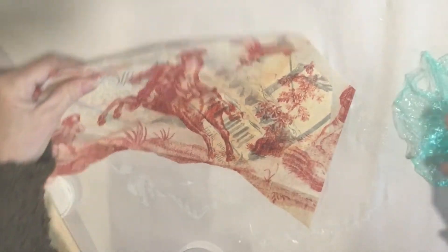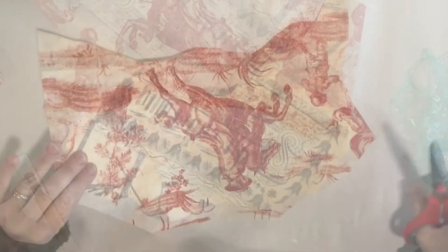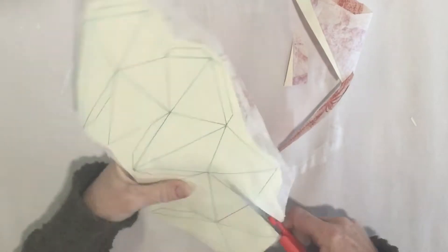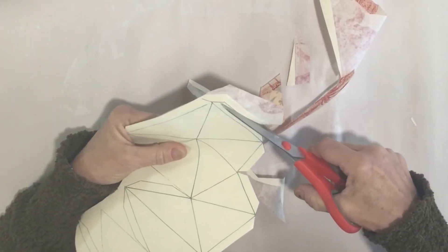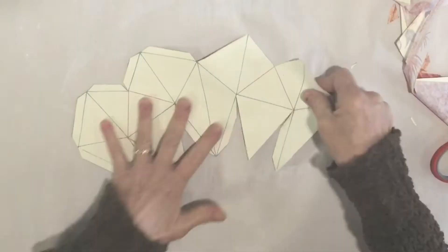So we're going to let this dry for a minute and then we're going to cut our piece out. Okay, so when this is dry I am going to cut out on all the black lines.